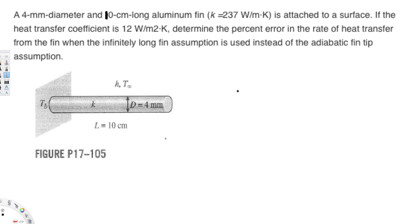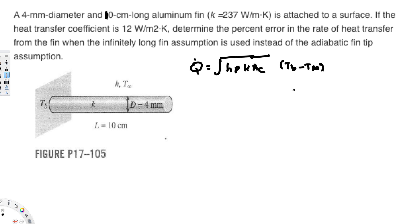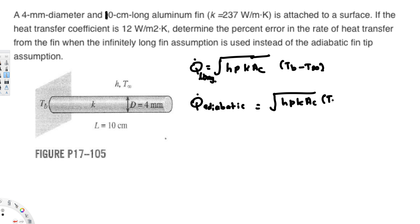To solve this problem, we need to know two equations. For the long fin, we use Q̇_long = √(HpKAc) × (Tb − T∞). For the adiabatic fin tip, it is slightly different: Q̇_adiabatic = √(HpKAc) × (Tb − T∞) × tanh(mL).